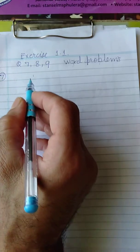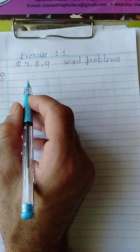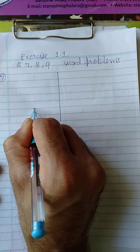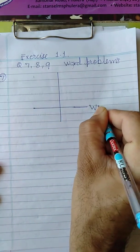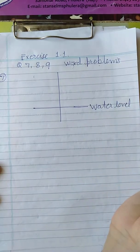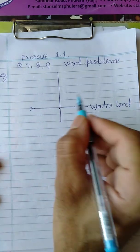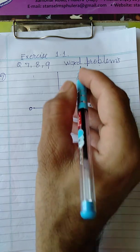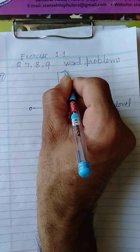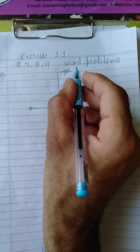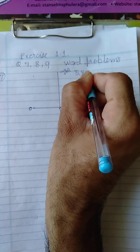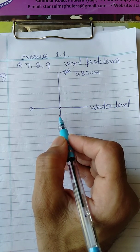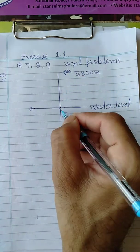This is question number seven. I'm just reading it, listen carefully. A plane is flying at a height of 5850 meters. I'm just drawing a diagram here. This is water level, water level is always we take zero. This is zero. According to the question, a plane is flying at a height of 5850 meters above. The plane is here. And a submarine is floating at a depth of 700 meters below the water.